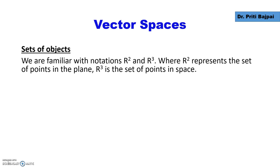First of all, we will define what set of objects are. We are all familiar with the notation of R², R³. We know that R represents a set of real numbers, R² represents set of points in the plane, and R³ represents set of points in the three-dimensional space.